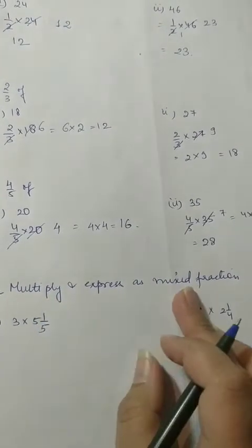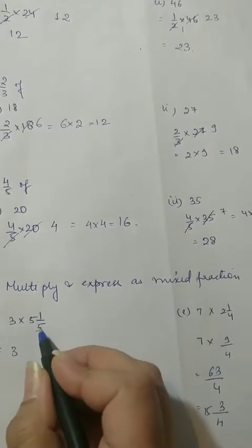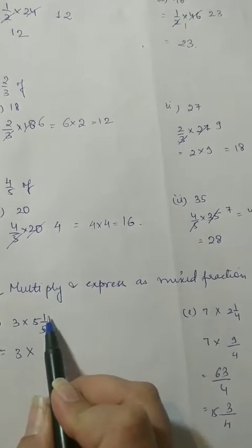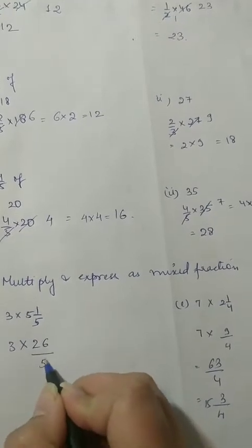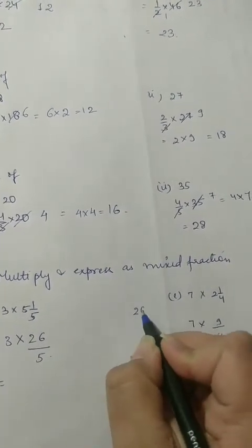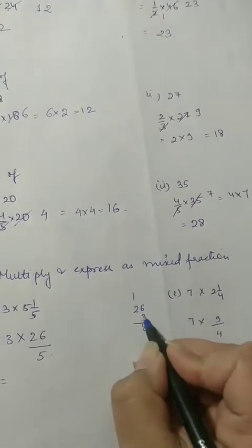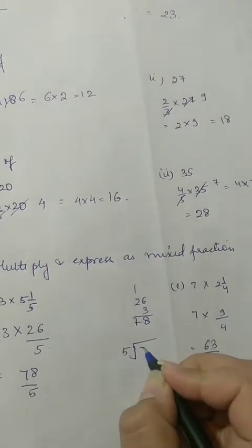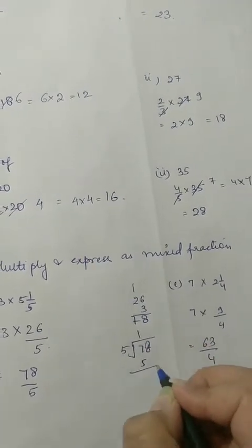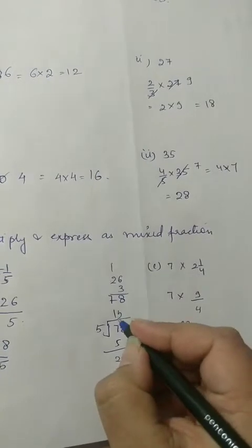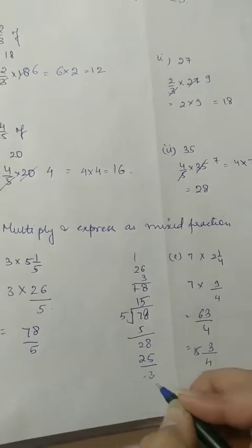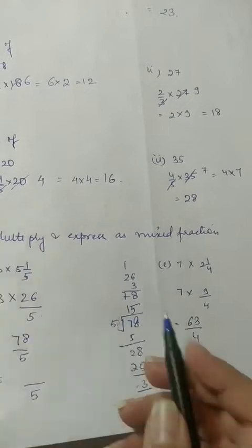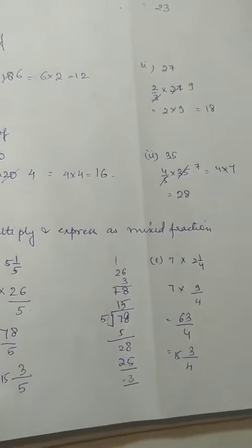इसमें क्या है — multiply and express as mixed fraction. ठीक है, पहले हम multiply करते हैं. यहाँ पर mixed fraction already है, we'll convert this into improper: 5 fives are 25, plus one is 26 by 5. कोई common factors नहीं है, we'll multiply 26 by 3: 6 threes are 18, 3 twos are 6 and 7 — 78 by 5. Now if we have to convert this into mixed: 5 fives are 25 and 3. Denominator वही रहेगा, 15, remainder is 3. This is our mixed fraction.